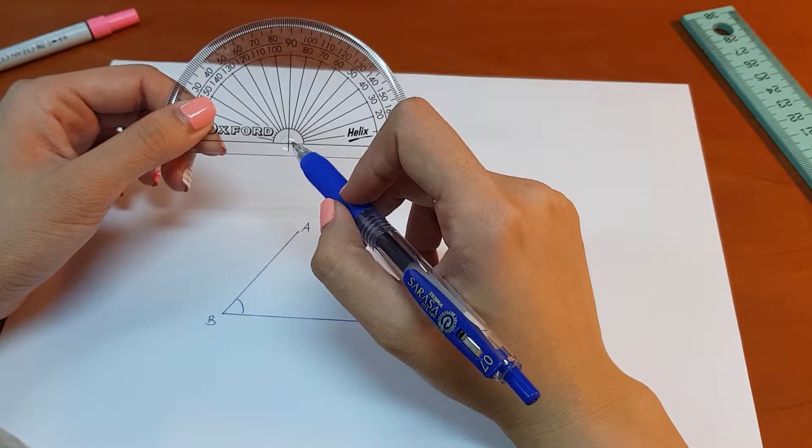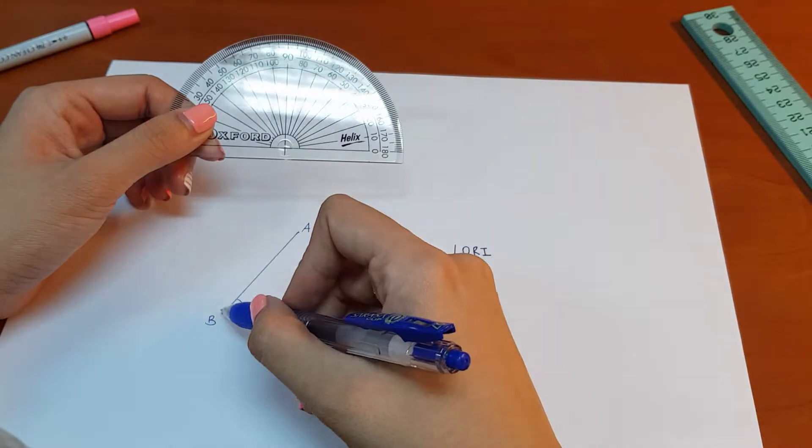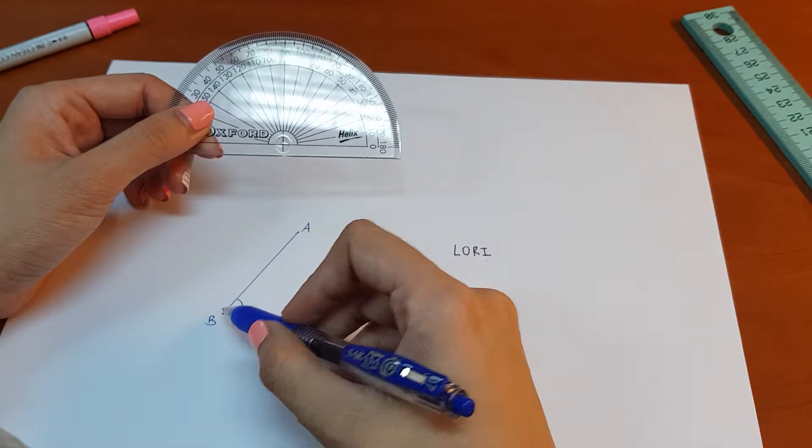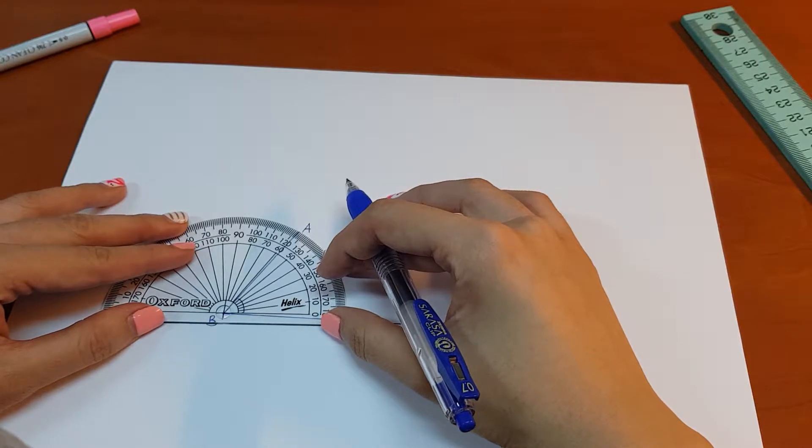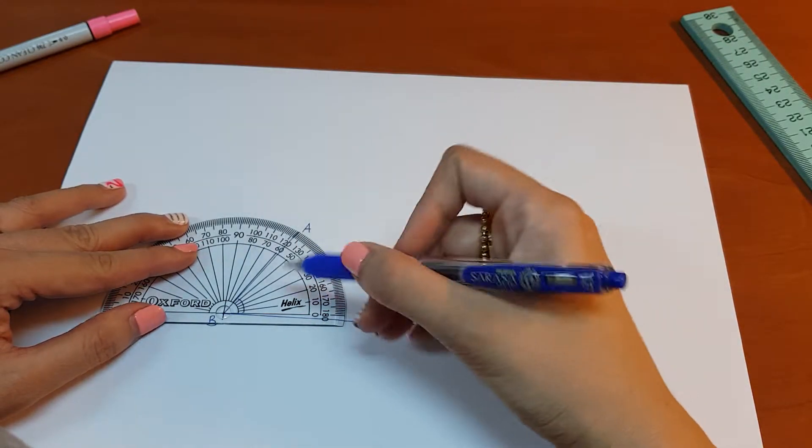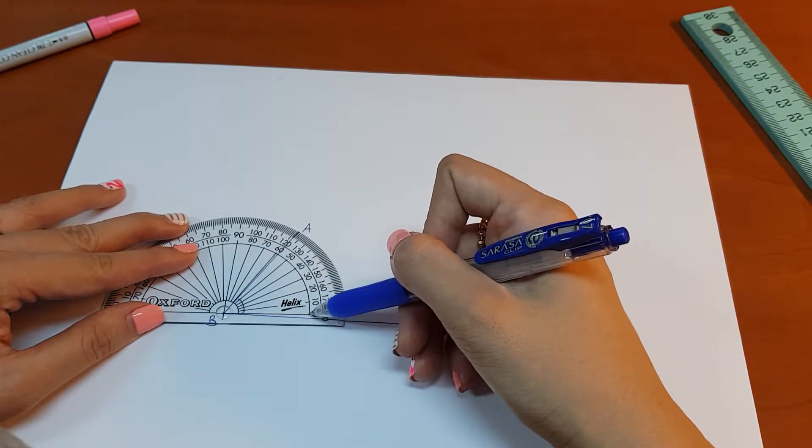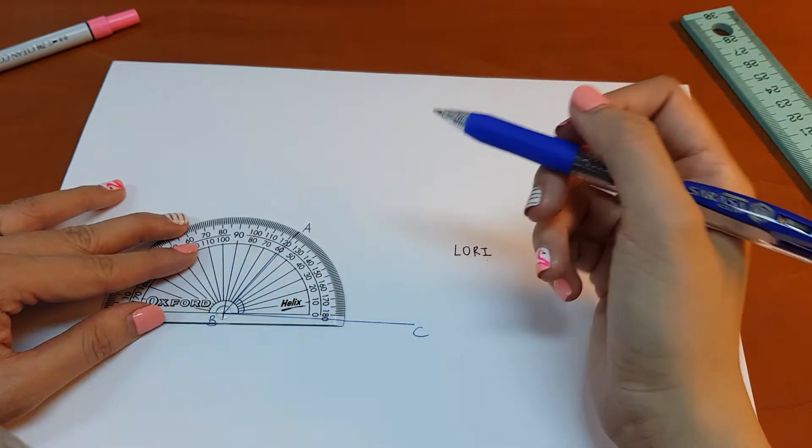Again, the vertex on the protractor must match the vertex over at the angle. We do not allow a space between the line, so let's ensure that the lines meet.